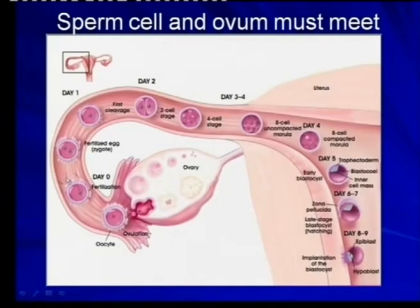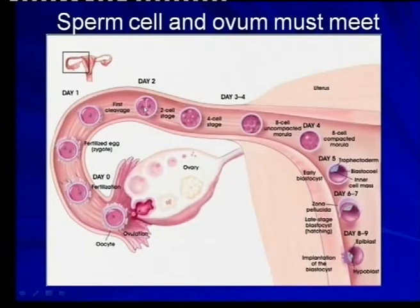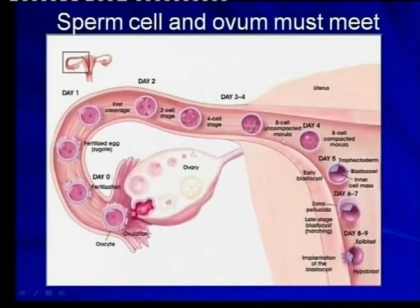This is where fertilization takes place — this one cell. The zygote has formed. Day one, cleavage starts: one cell becomes four, four becomes eight, and then it is called the morula. From there a blastocyst forms.